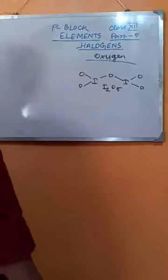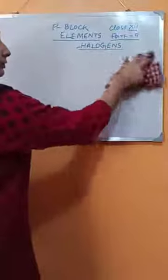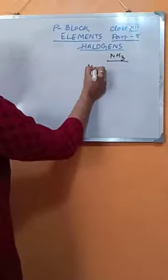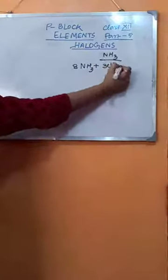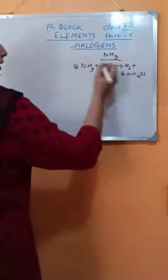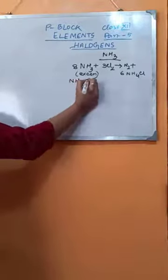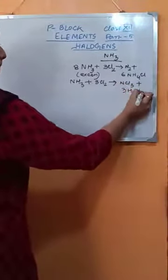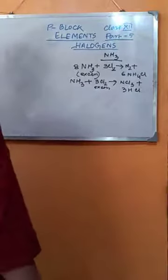Next is the reaction with ammonia. When ammonia reacts in excess with chlorine, one product is formed. And in the other case, when chlorine is given in excess, a different product is formed. These are the reactions of chlorine with ammonia.